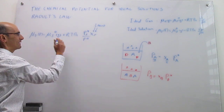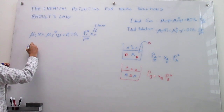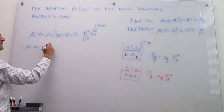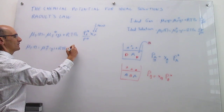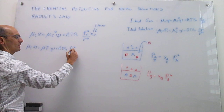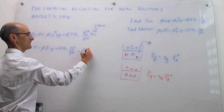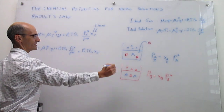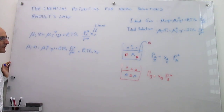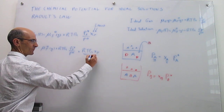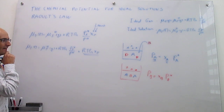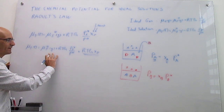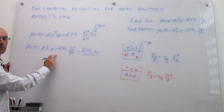Separating the natural log term, we get: RT times the natural log of P_J* over P_standard, plus RT times the natural log of X_J. This last term depends only on the liquid — it's just the mole fraction of J. But we still have terms that depend on the gas, and we need to relate those somehow to properties of the liquid.